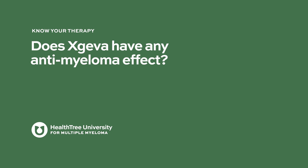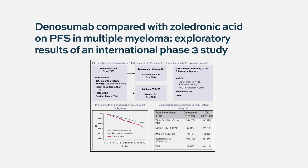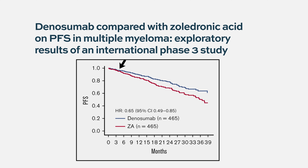Does Xgeva have any anti-myeloma effect? It is well known that myeloma is not just the cell itself, but also the cells around it that are very important. When we treat the cells around the myeloma — in this case the osteoclasts — by affecting RANK ligand with Denosumab, these patients may actually do better. There was a large study comparing zoledronic acid to Denosumab. Even though it wasn't the primary endpoint, patients that received Denosumab, especially a subtype of patients, were more likely to live longer and progress less — there was a 10-month difference in progression-free survival compared to patients that received zoledronic acid. So the bone targeting agents may also help against the myeloma itself.